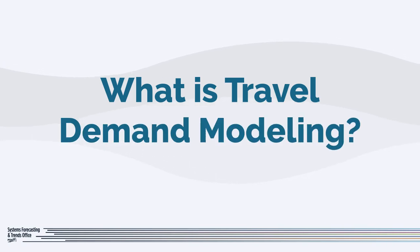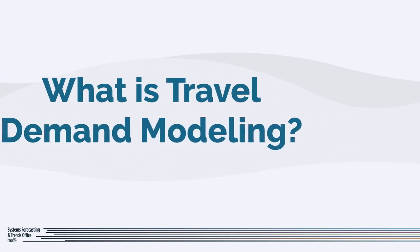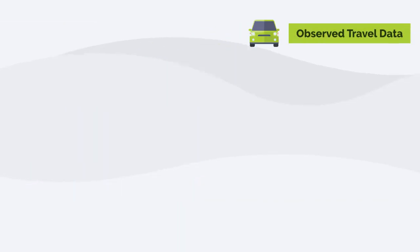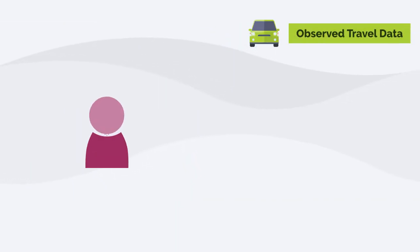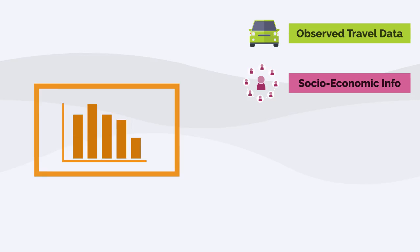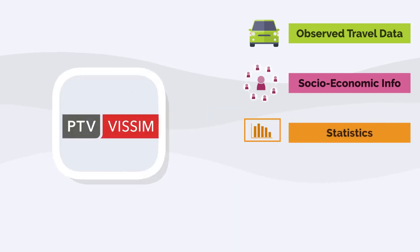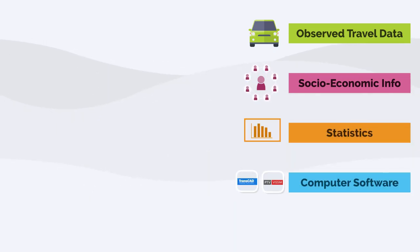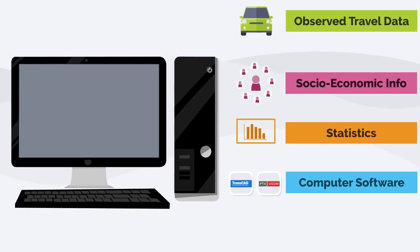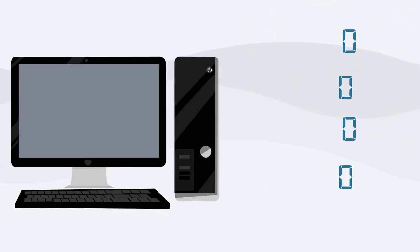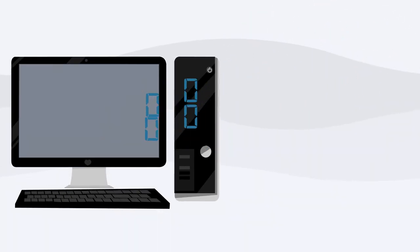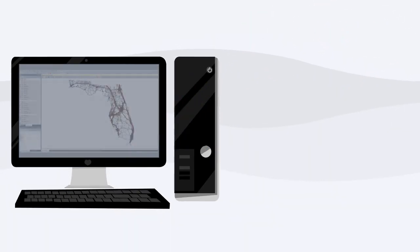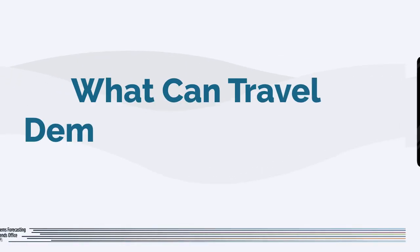What is travel demand modeling? It's a set of tools that use a blend of observed travel data, socioeconomic information, statistics, and computer software to predict how people will travel in the future. Models are used by planners, traffic engineers, and land developers to plan and design roads, buses, and other transportation infrastructure.